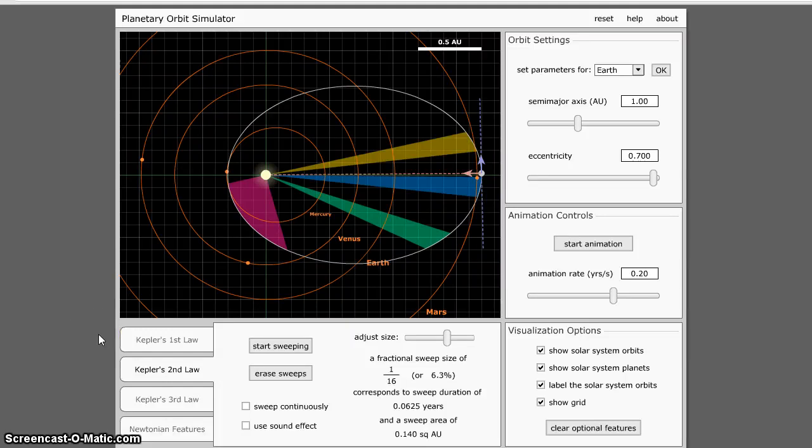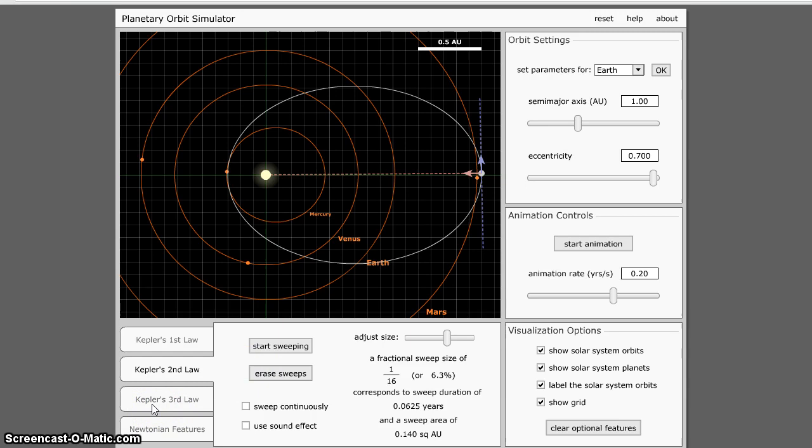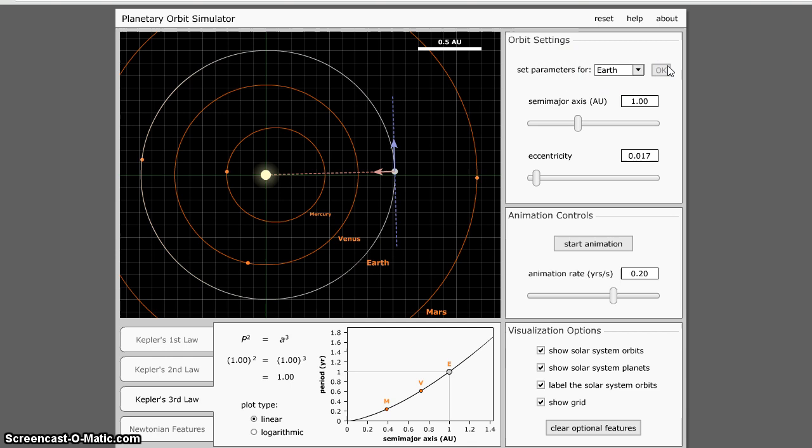This is the instructions for Part C, Kepler's Third Law. For Kepler's Third Law, we're going to erase all the sweeps. We're going to go to this Kepler's Third Law part, and we want to set the parameters for Earth. So now, when you look at this, there are two pieces of information.